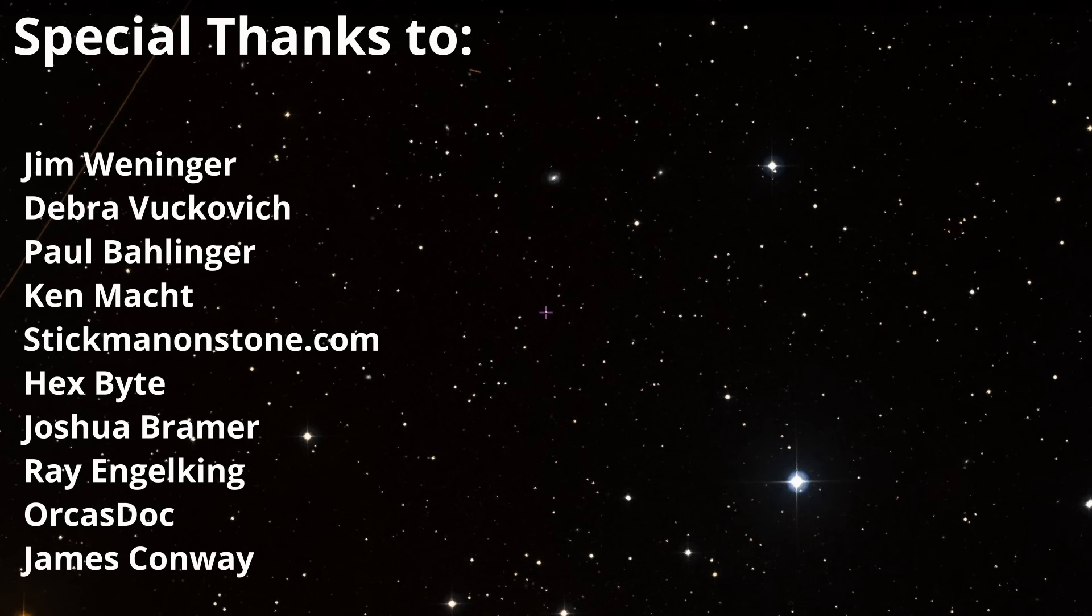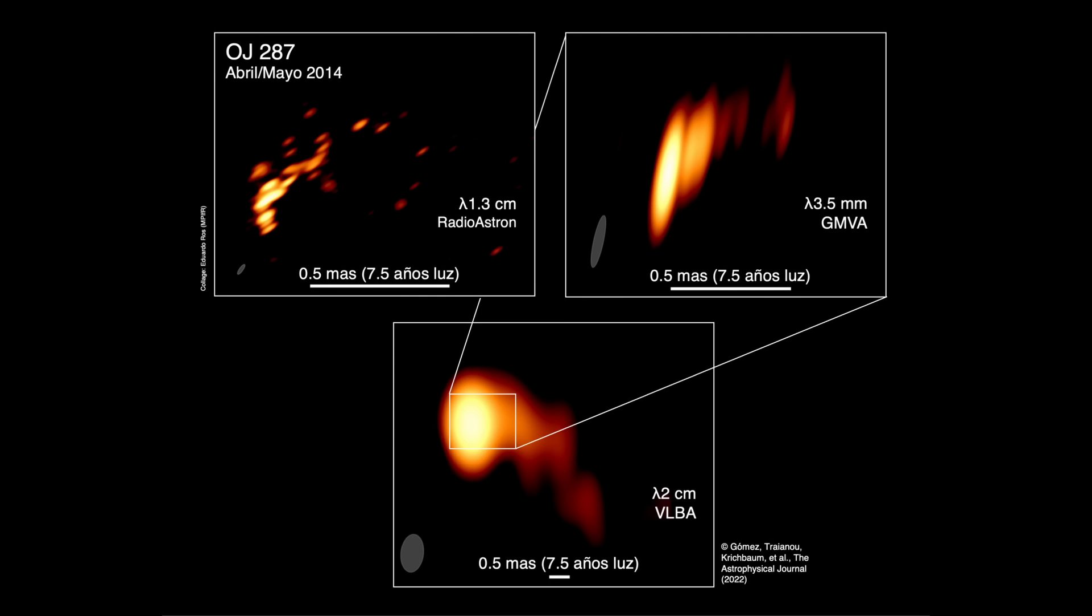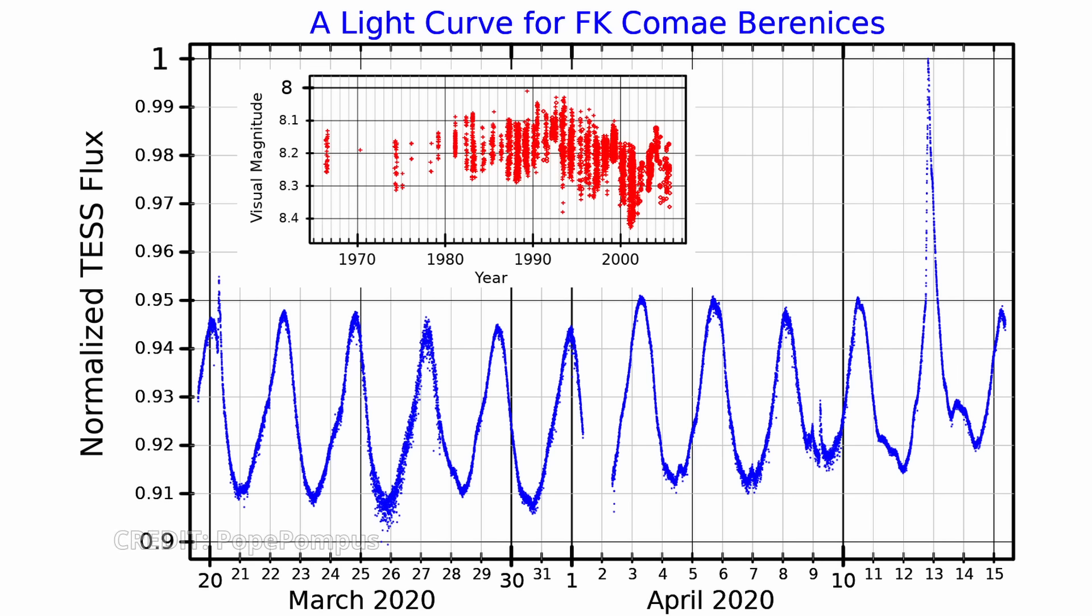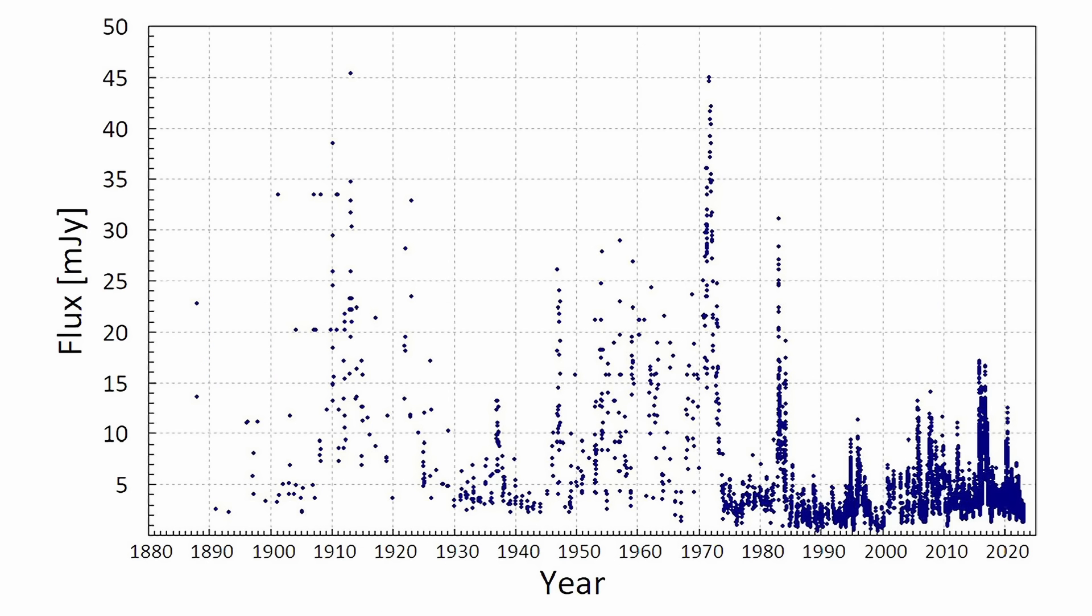Blazar OJ-287 is one of the most well studied and historically significant active galactic nuclei, first discovered in 1891. This discovery was part of a systematic search for variable stars, and OJ-287 was initially catalogued as such due to its apparent brightness fluctuations.